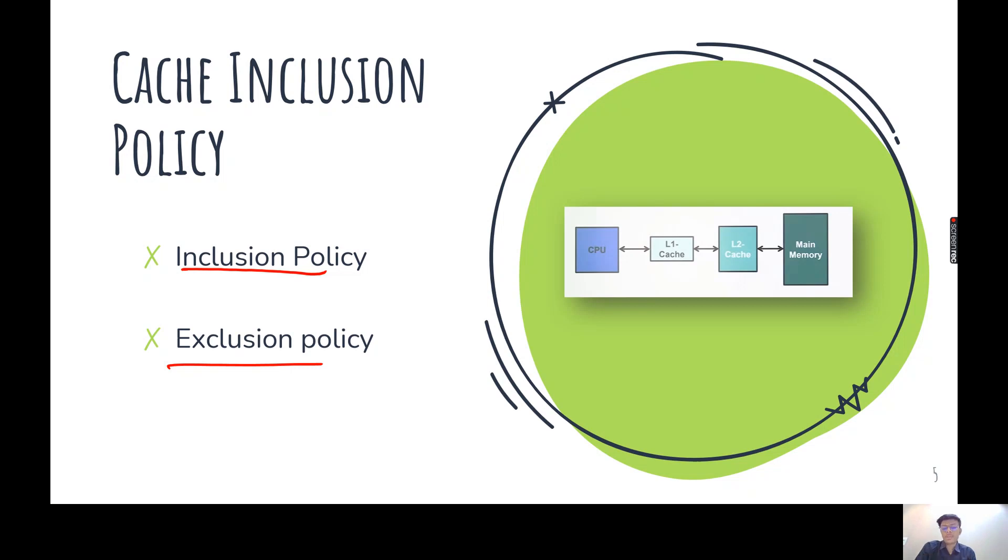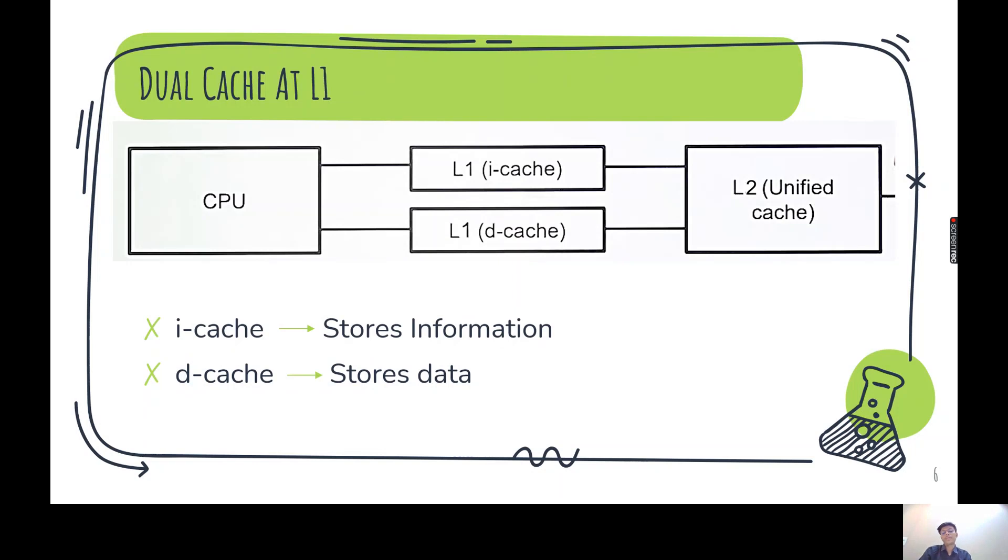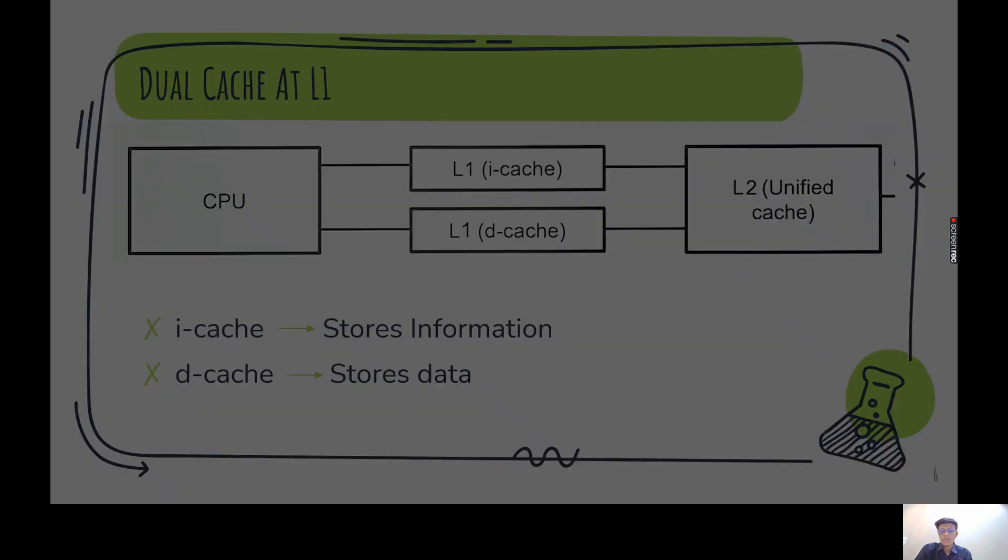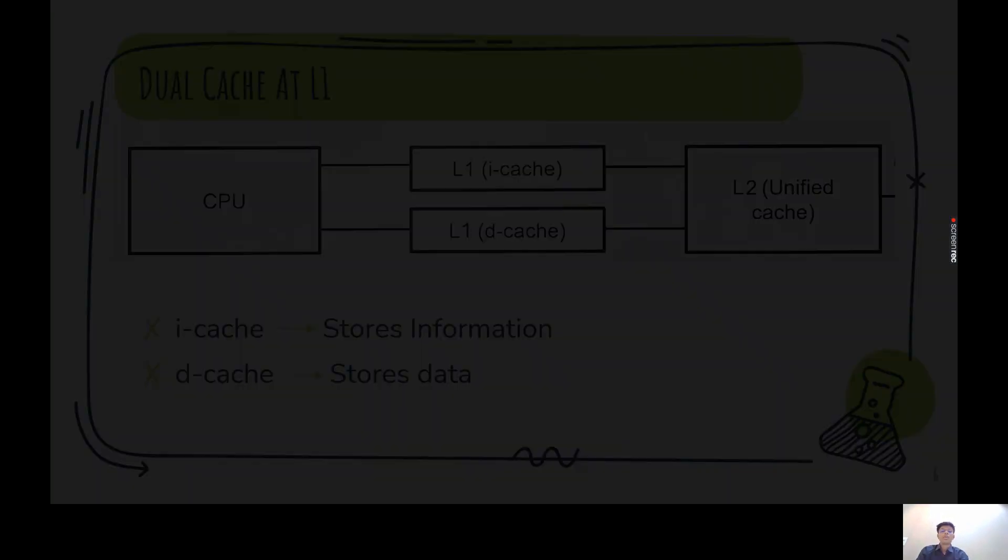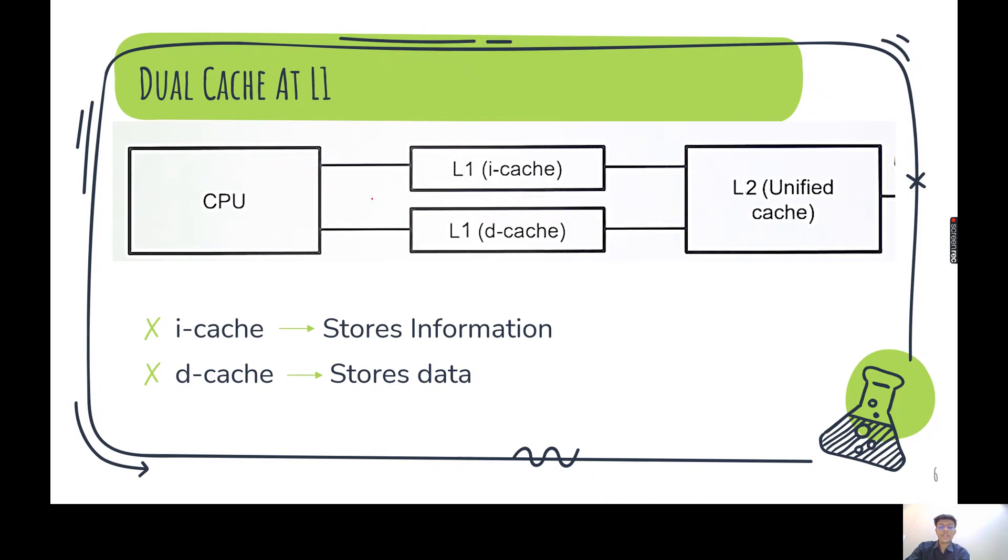Now, so sometimes the CPU requires both information as well as data simultaneously. And it is not possible using L1 cache only. It can access both at a simultaneous manner. So the scientists divided L1 cache into two parts. L1 I cache and L1 D cache. So L1 I cache stores the information and L1 D cache stores the data. So these are two different cache blocks having two different kinds of data. The first contains information and second contains data. So whenever simultaneous requirement of the information as well as data, the CPU can access both of them. Thank you.